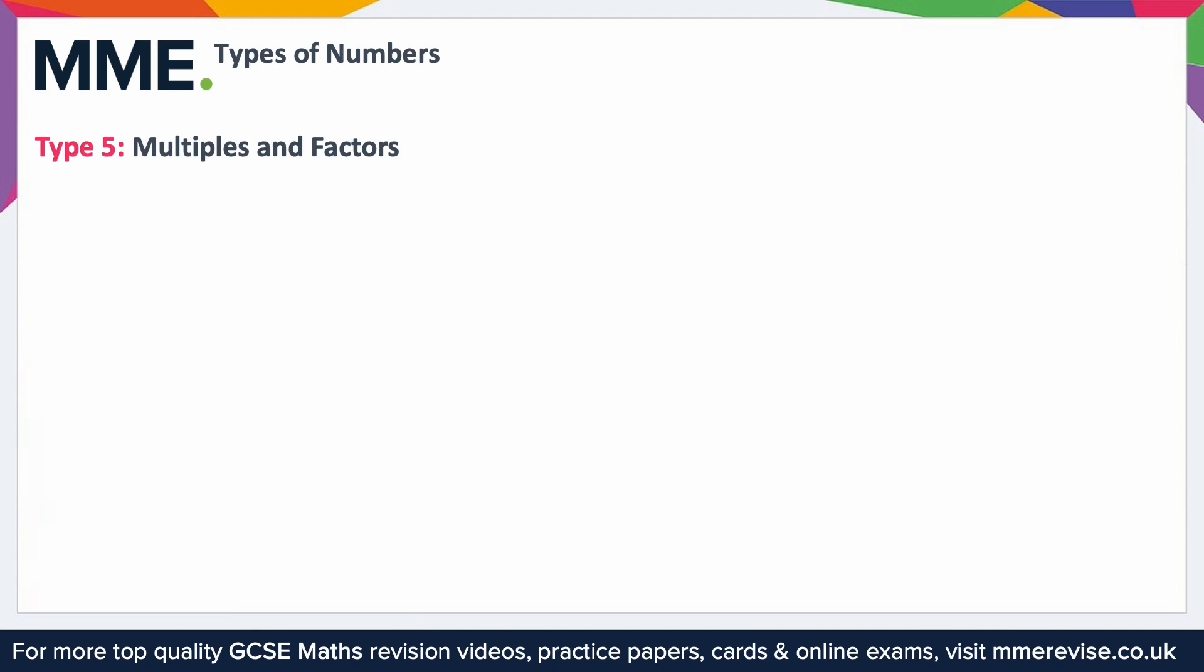So what I mean by that is, for example, you could say 30 is a multiple of 6 because 30 is 6 times 5. Similarly, I could say that 18 is a multiple of 6 because 18 is 6 times 3, and so on.